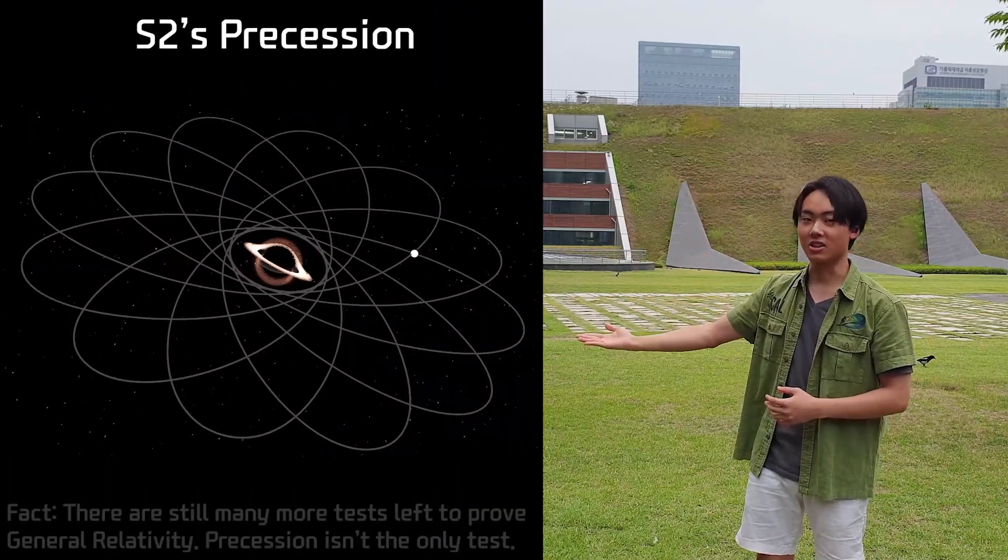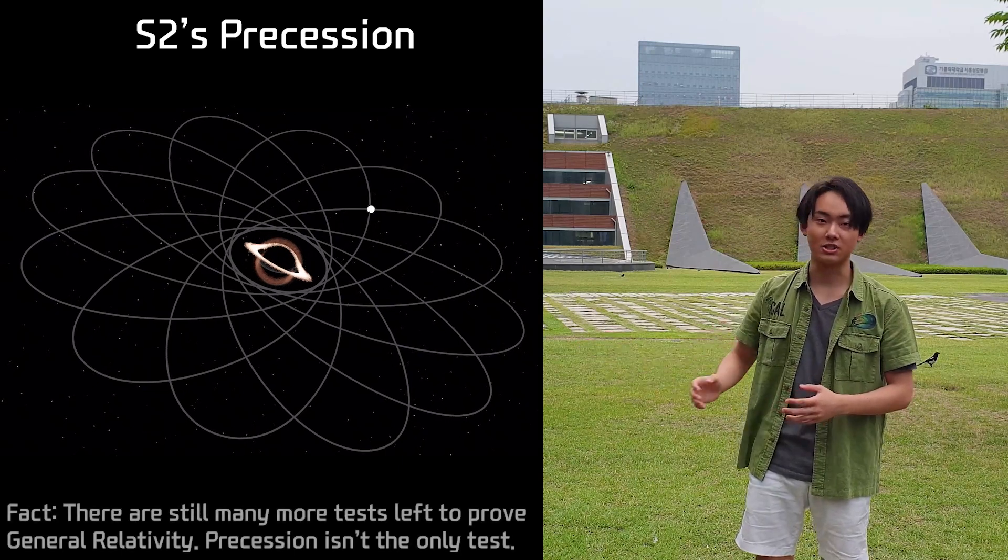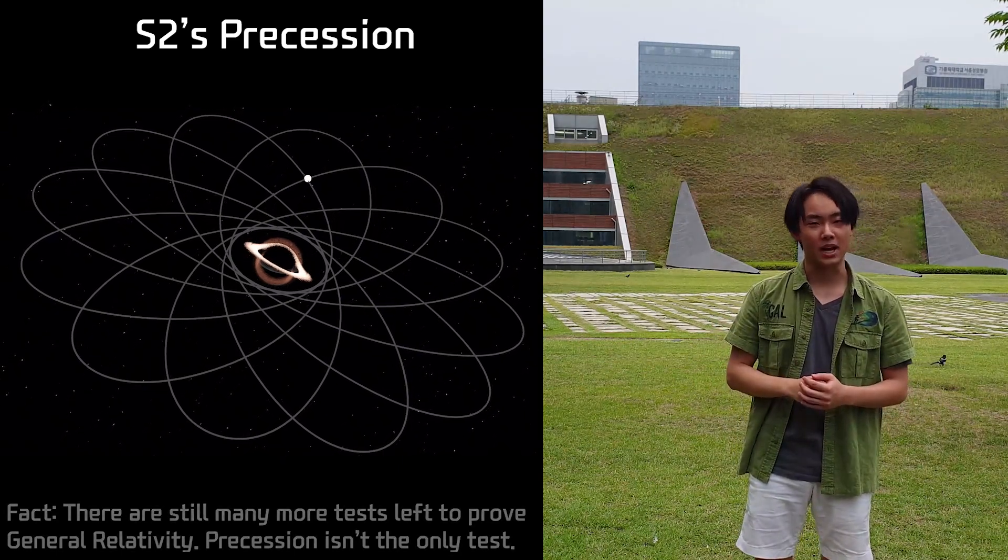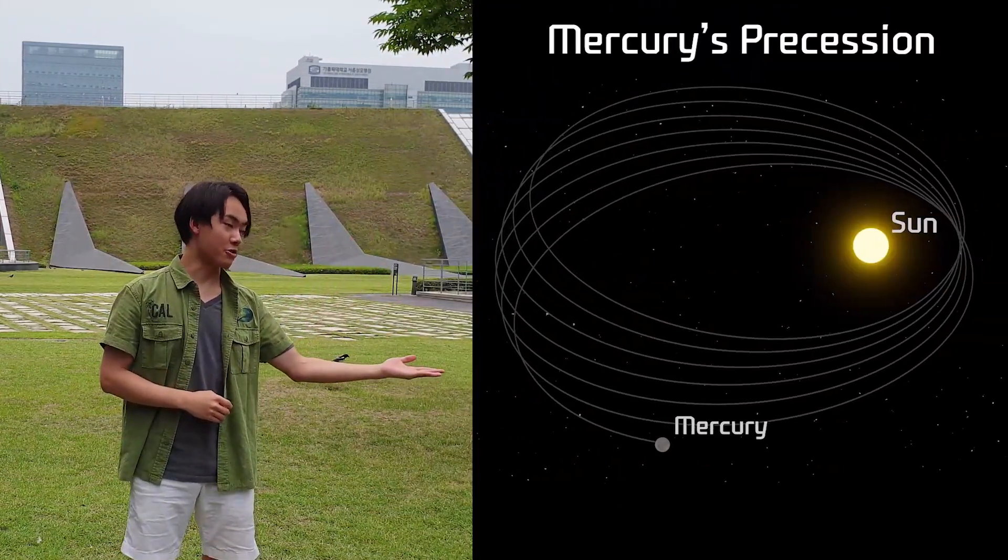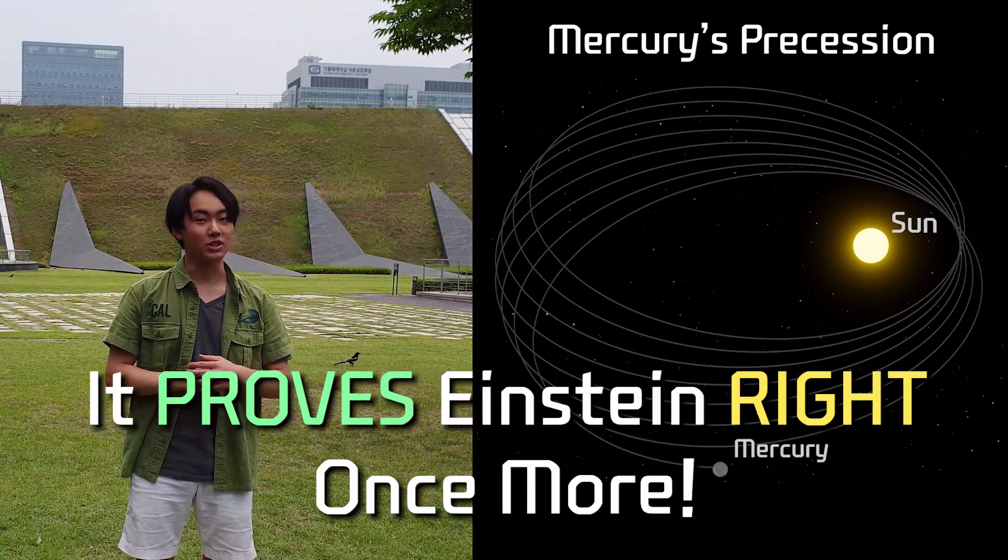S2's precession is a large-scale clarification of general relativity, first time on a massive black hole. And just like Mercury, it proves Einstein right once more.